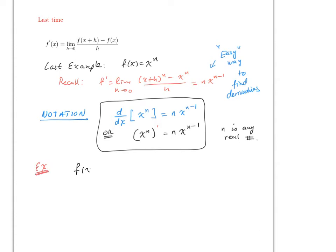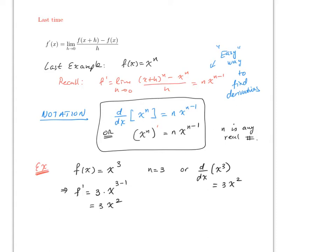Remember before we had f(x) equals x cubed. Here clearly the value for n is 3, so therefore f prime is going to be 3 times x to the 3 minus 1, which will be just 3x squared, and that's it. Or we could say: what's the derivative with respect to x of x cubed? And this will be 3x squared.